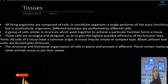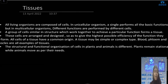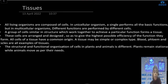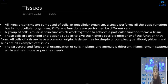Now we are going to see about tissues. In this lecture we are going to talk mainly about plant tissues. Before that we have to learn what tissues are. All living organisms are made up of cells. In unicellular organisms there is a single cell, and in multicellular organisms there are many cells. In unicellular organisms one cell performs all the functions, and in multicellular organisms a group of cells performs different functions.